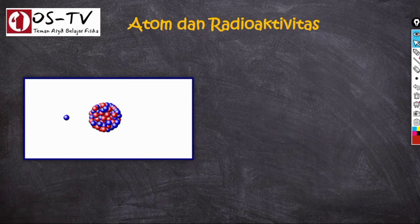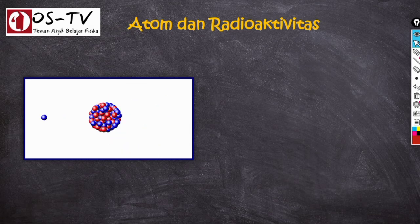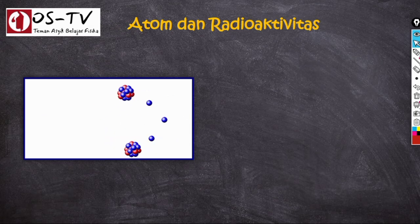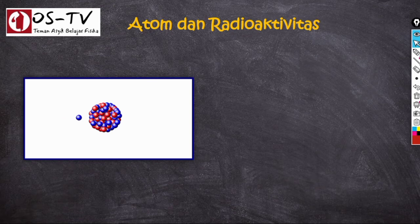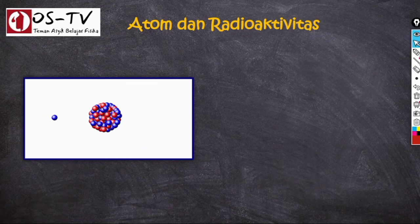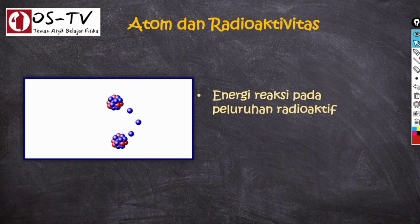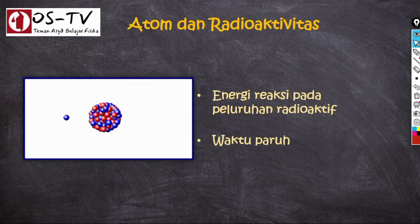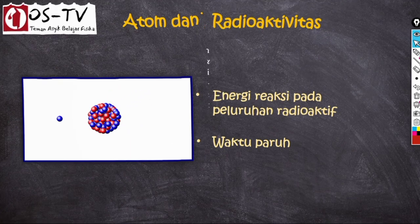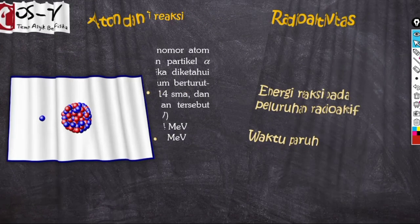Sekarang kita lanjutkan pada model soal yang sering keluar pada UTBK atau SBMPTN untuk pokok bahasan atom dan radioaktivitas. Soal yang sering keluar di antaranya terkait energi reaksi pada peluruhan radioaktif serta terkait waktu paruh. Kita mulai dari contoh soal yang pertama.